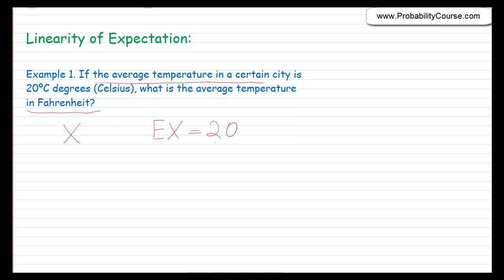Now the question is: I pick a random day but I measure the temperature in Fahrenheit, so let's call it y. y is a random variable. We know that if we have the temperature in Celsius, we can convert it to Fahrenheit. In particular, y is equal to 1.8 times x plus 32.